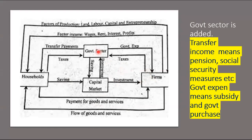Now the role of government is added. Government provides transfer payment — meaning salary and wages — to the household. Government also spends money on firms through government expenditure, providing subsidy and making government purchases from firms. Then both households and firms pay taxes to the government. You can write 'capital market' or 'financial market' — both are correct.